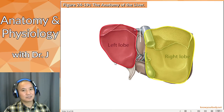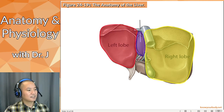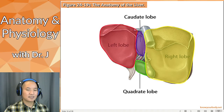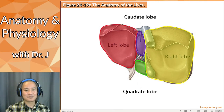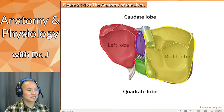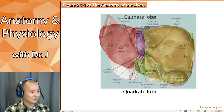The left lobe and right lobe are pretty obvious from the front, but the other two lobes are hard to see from the anterior. From the posterior, they're in the middle. We have the caudate lobe and the quadrate lobe. The quadrate lobe is named because it's roughly quadrangular — a four-sided polygon. Caudate comes from 'caudal,' meaning tail, but it's actually the more superior lobe — it's said to look like the tail of the liver.